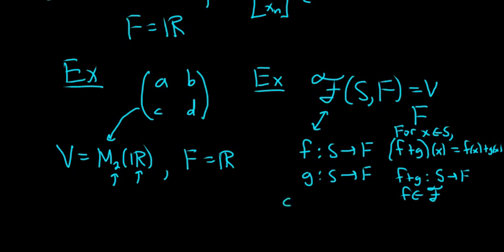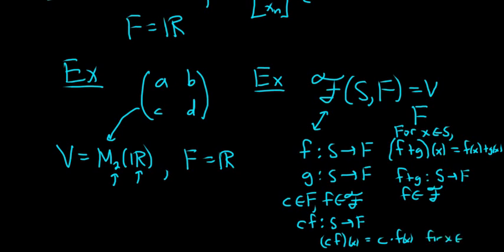And then you define scalar multiplication in a similar way, right? You have given c in f and f in fancy F. We define a new function called cf, which is also a function from s to capital F. And it's defined as follows. You take cf of x, and that's c times f of x. And of course, that's true for each x in s. So you have two operations, right? You have the vector addition operation, and you have the scalar multiplication operation. And under those two operations, the set of all functions from s to f is also a vector space.